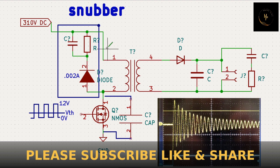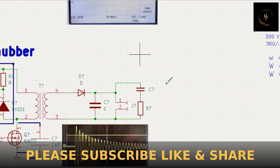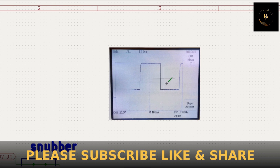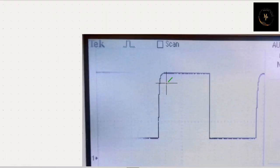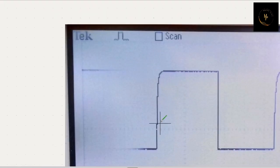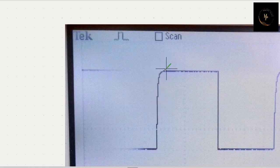So if you use this snubber circuit, you get a pulse like that. See this? There is a slope, and that is the main cause.